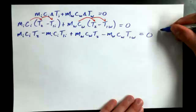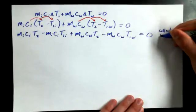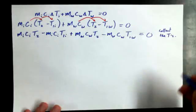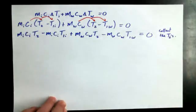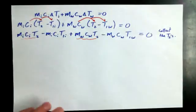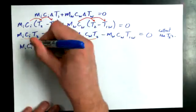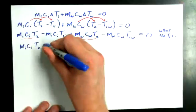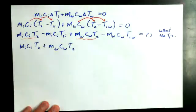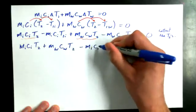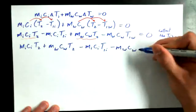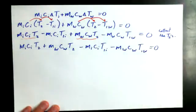Now, I want to make a comment. Collect the T's. So I want to collect like terms. I should maybe say, collect the T2's. So I'm going to take this guy here, and this guy here, and I'm going to put them together. So I say, M-I-C-I-T2 plus M-W-C-W-T2 minus M-I-C-I-T1-I minus M-W-C-W-T1-W, all equal to zero.